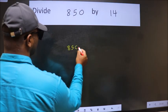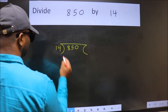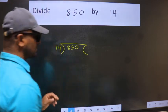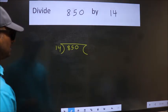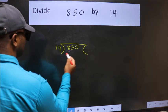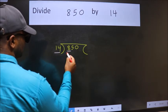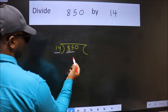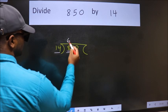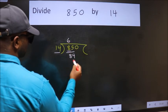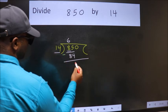850 here. 14 here. This is your step 1. Next. Here we have 8. Here 14. 8 is smaller than 14. So we should take two numbers, 85. A number close to 85 in the 14 table is 14 times 6, 84. Now we should subtract. We get 1.